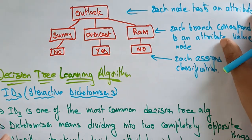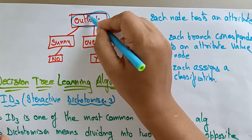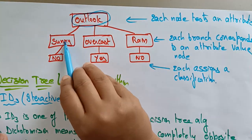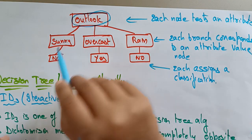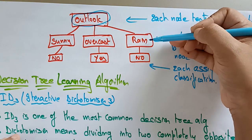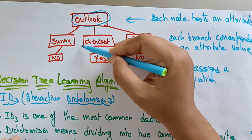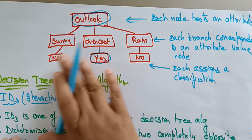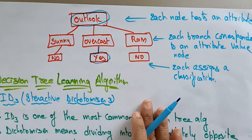Let us take a simple example. Suppose we look at weather forecasting — the outlook. If it is sunny, you are not supposed to go out. If the outlook is raining, obviously you won't go for sightseeing. But whenever it is overcast, then you prefer to go out. So this is a decision you are making by taking so many inputs.